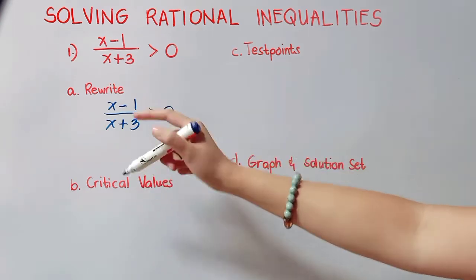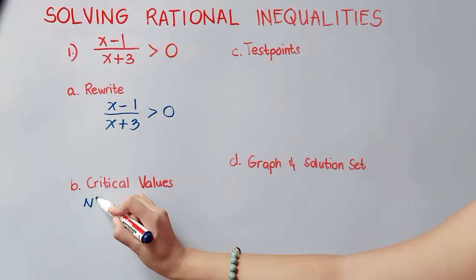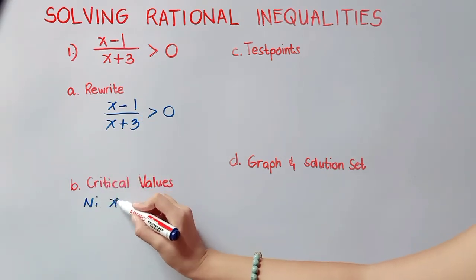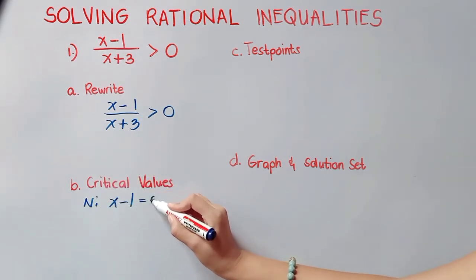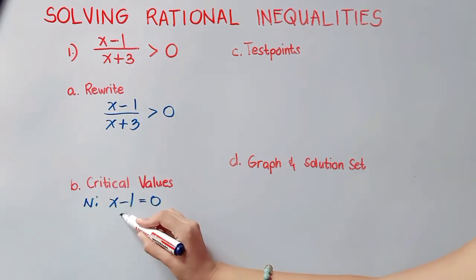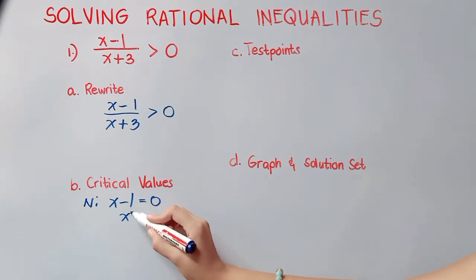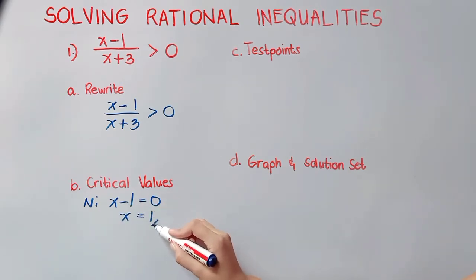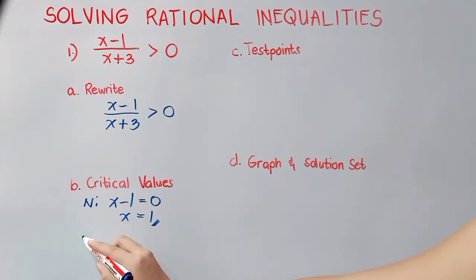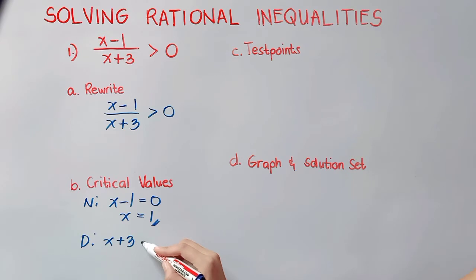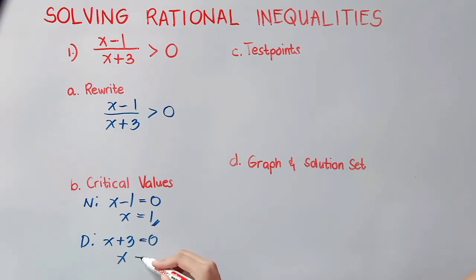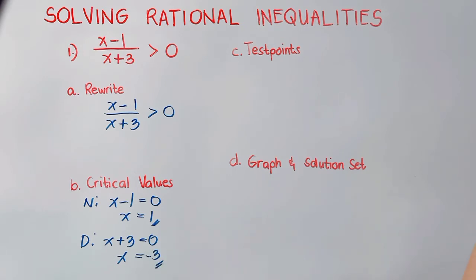Critical values are values that define regions to be tested. We can get these values by setting our numerator to 0 and our denominator to 0. In our numerator, transposing negative 1, it becomes positive 1. For the denominator, x plus 3 equals 0, so transposing 3 from positive, it will become negative 3.